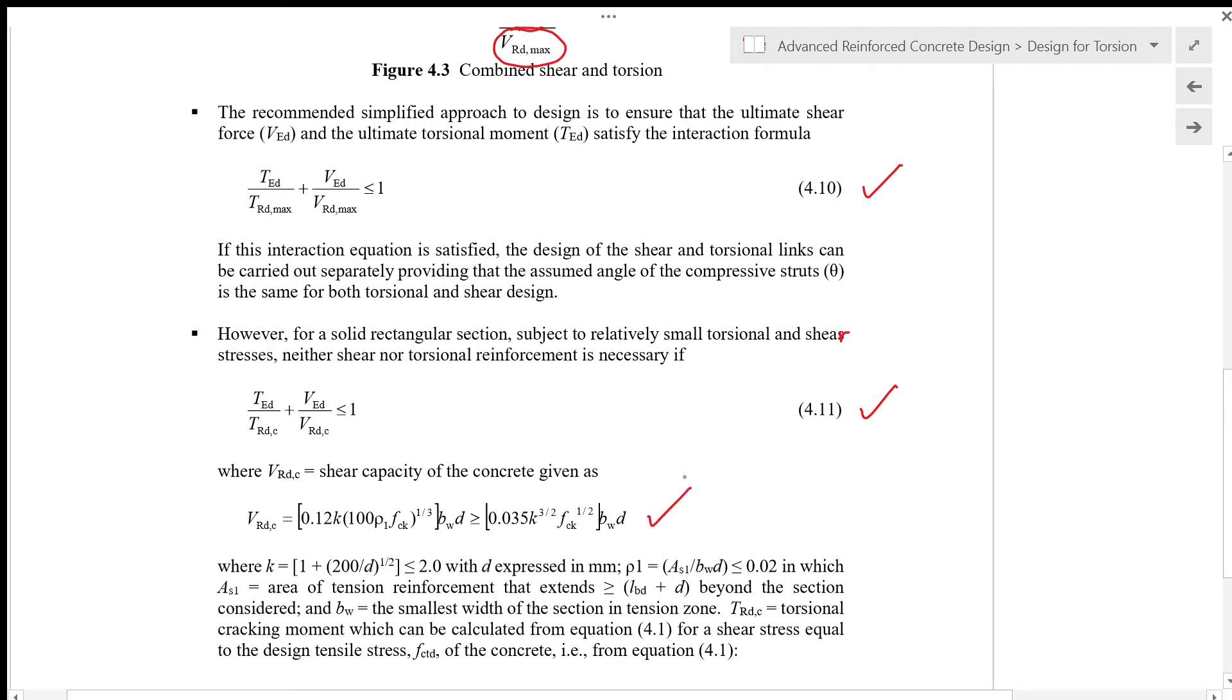VRDC is the shear capacity of the concrete given as an equation where K is a function of D and should be ≤ 2 with D expressed in millimeters. ρ1 is the provided steel reinforcement for bending in which As1 is the area of tension reinforcement that extends beyond the length of LBD + D beyond the section considered. BWD is the smallest width of the section in tension zone.